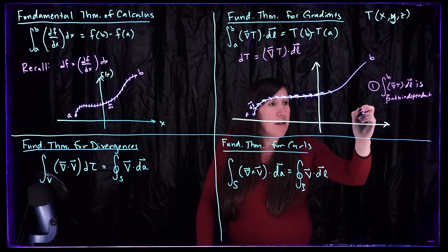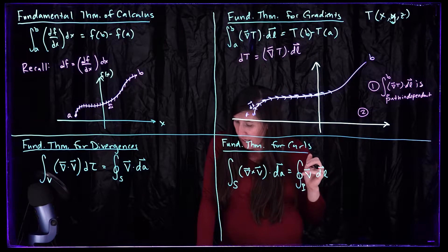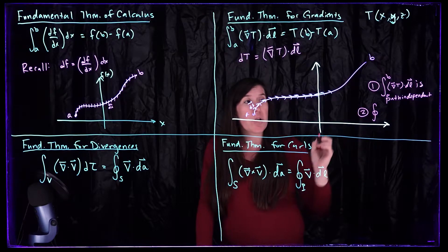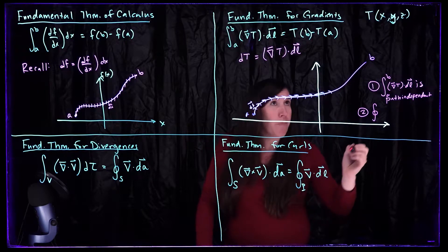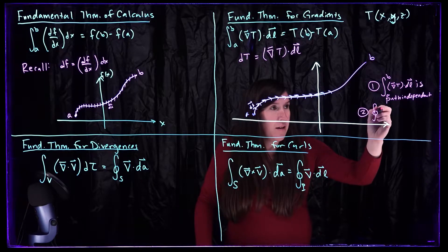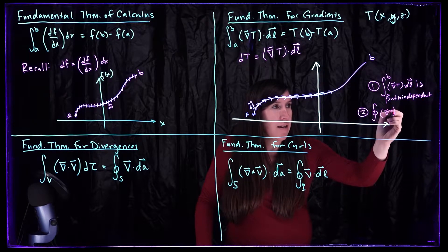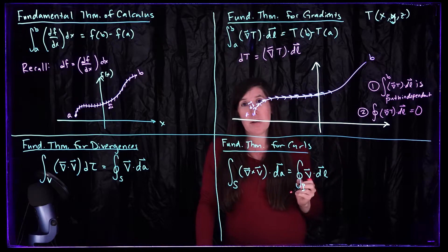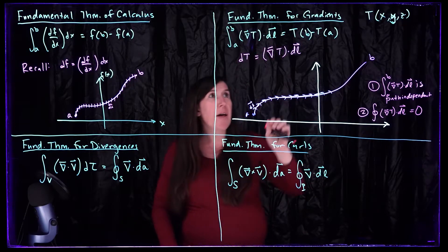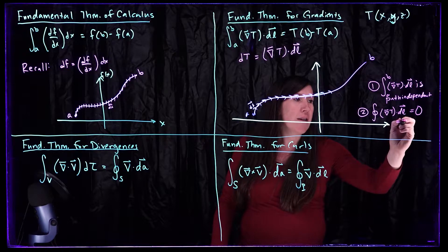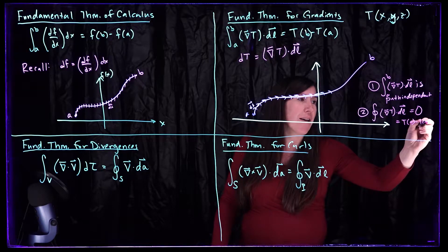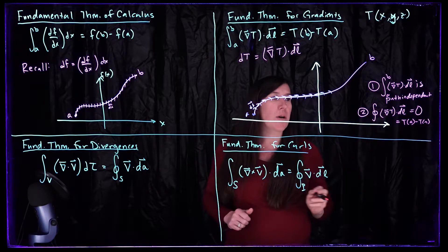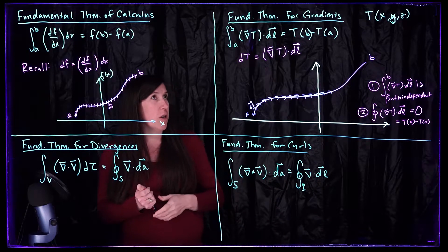The other thing that also immediately follows is that if we consider doing this over some closed path — this is the symbol we use for a line integral over a closed path — of del T dot dL, this is always going to be equal to zero. If we do this over a closed path, it's like T of A minus T of A, because we're starting and ending at the same point. So this is always going to be equal to zero if our line integral is over a closed path.